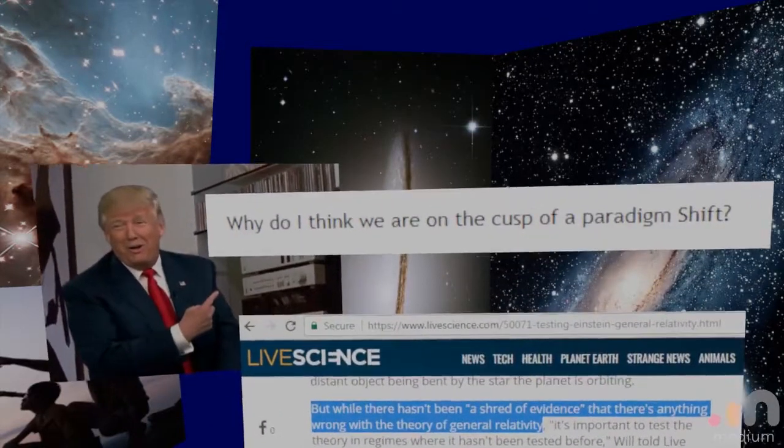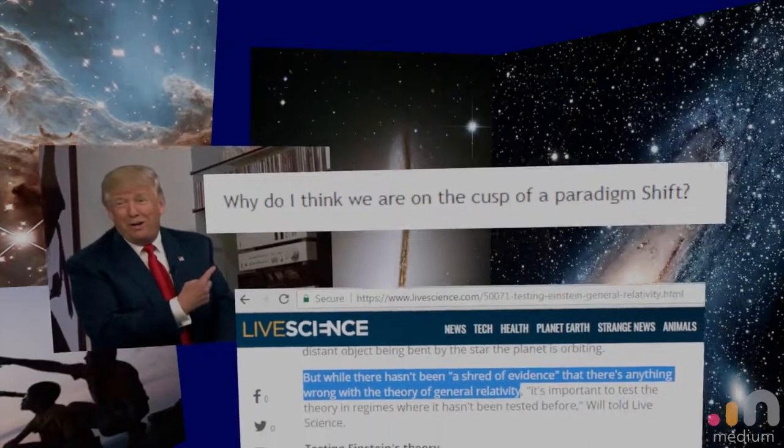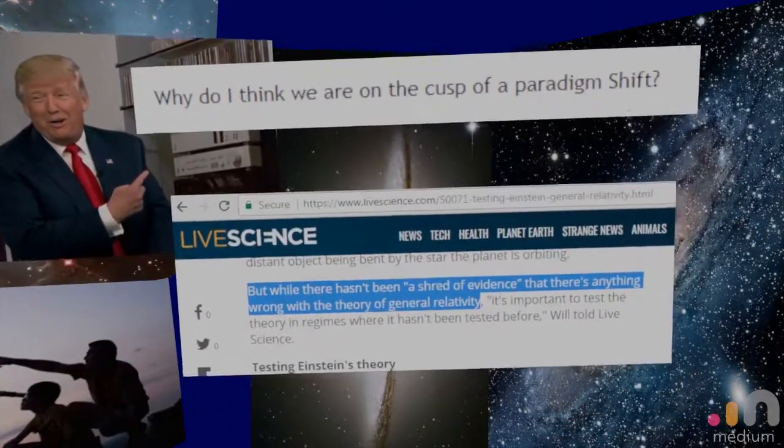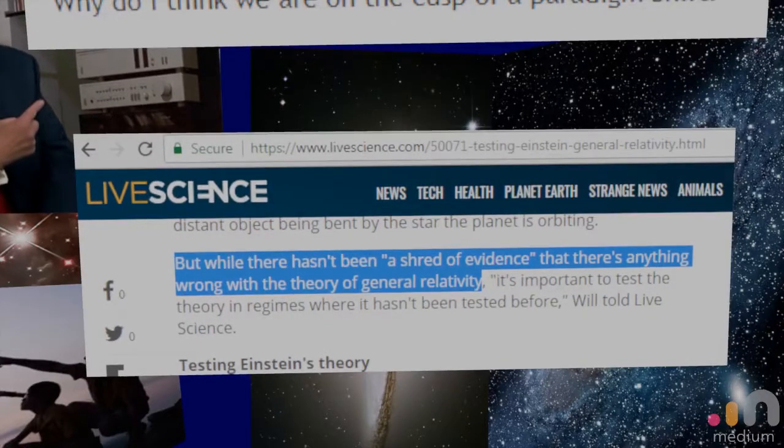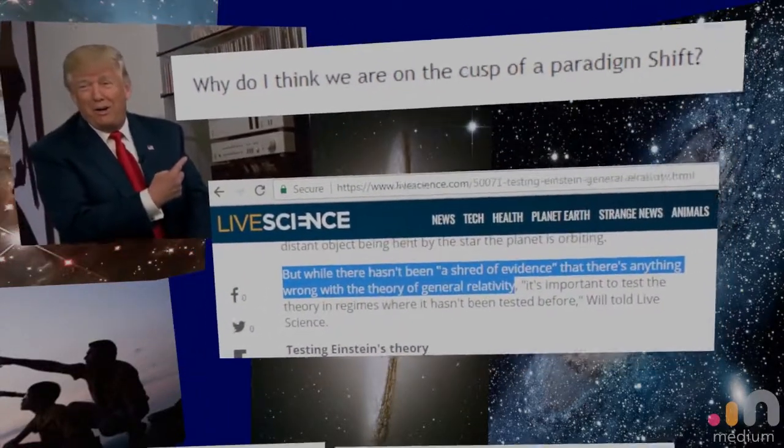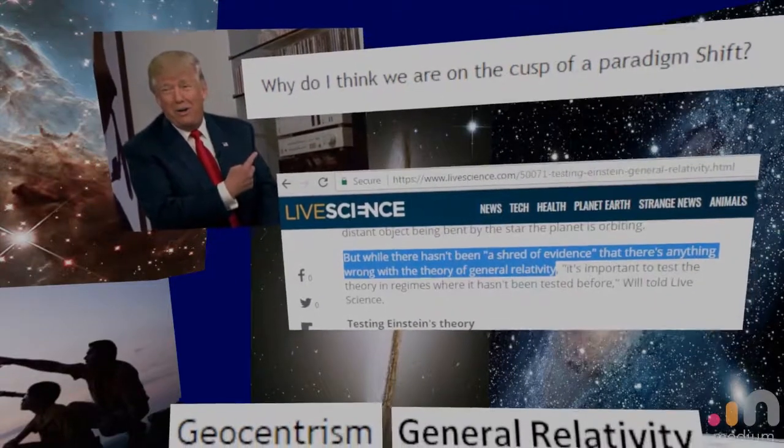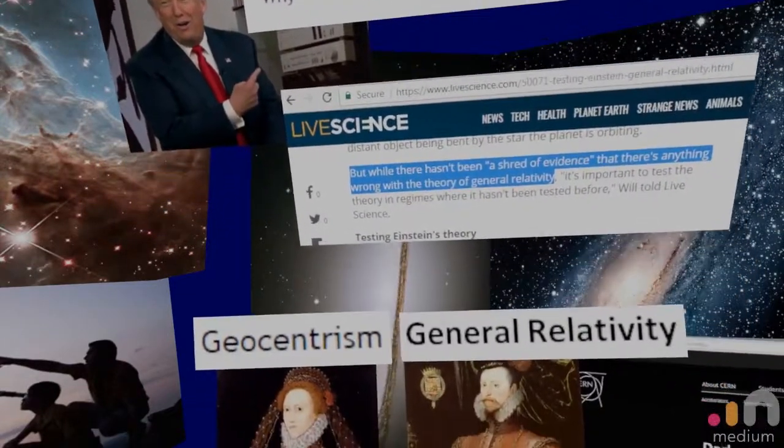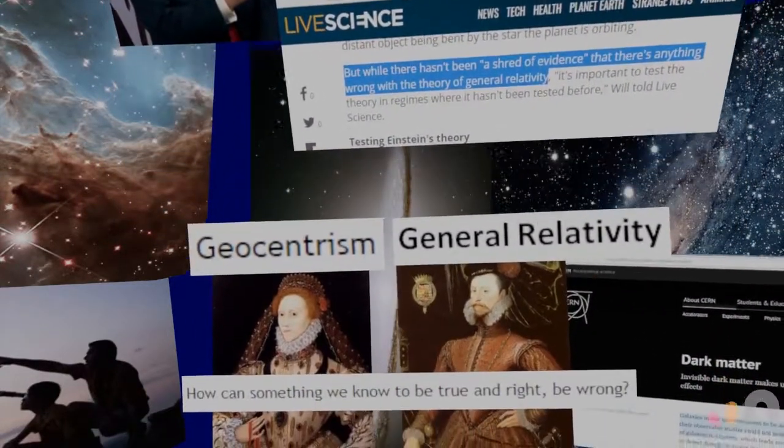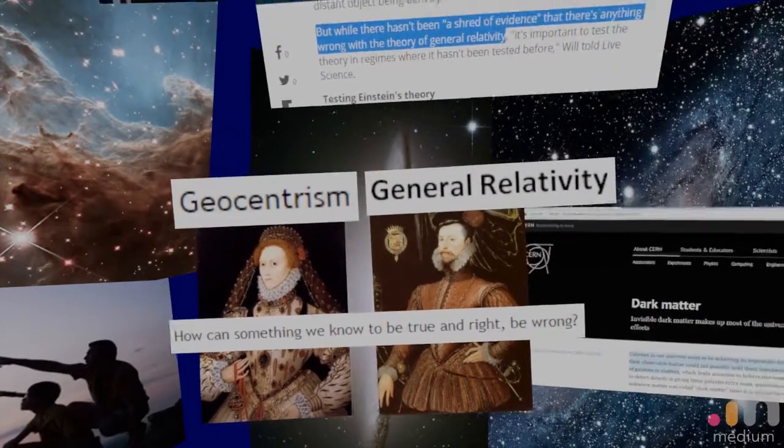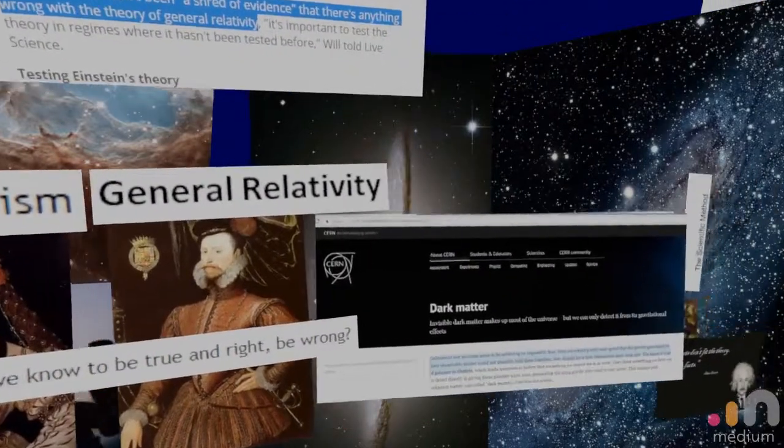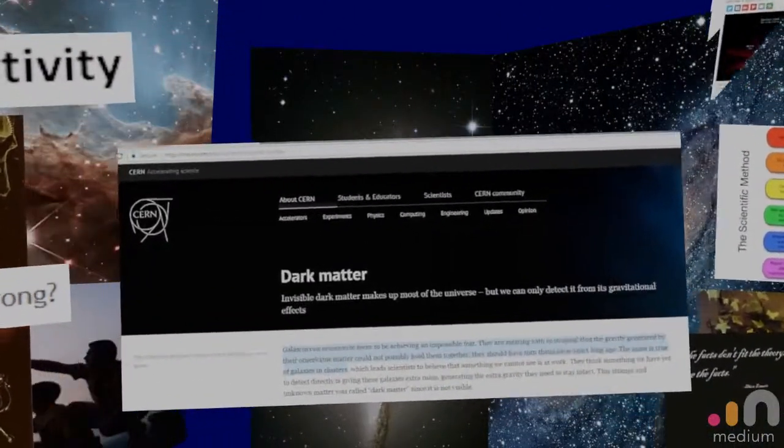Why do I think we are on the cusp of a paradigm shift? Even though we have theoretical physicists in articles for Live Science that are saying there isn't a shred of evidence that there's anything wrong with the theory of general relativity. Again, just like geocentrism, how can something we know to be true and right be wrong? Well, let's just look at some of these articles. Let's look at this article right here.